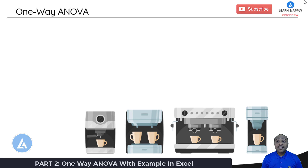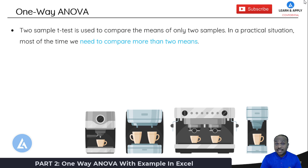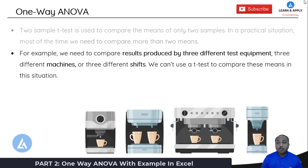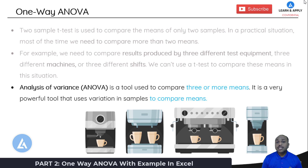Before going into the detail, let's first understand what is one-way ANOVA and its practical application. There is another hypothesis test called the two-sample t-test, which is used to compare the means of only two samples. But in practical situations, most of the time we need to compare more than two means — for example, results produced by three different machines or three different shifts. We cannot use a t-test for that; we need ANOVA. The full form of ANOVA is Analysis of Variance, a powerful tool that uses variation in samples to compare three or more means.